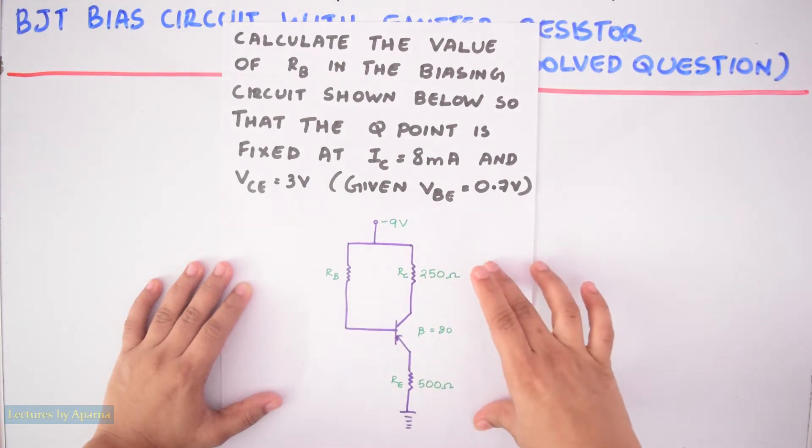So this is the circuit. This is a bias circuit with emitter resistance type of circuit. This circuit is a modification of fixed bias circuit. The only difference is that there is an emitter resistor here.